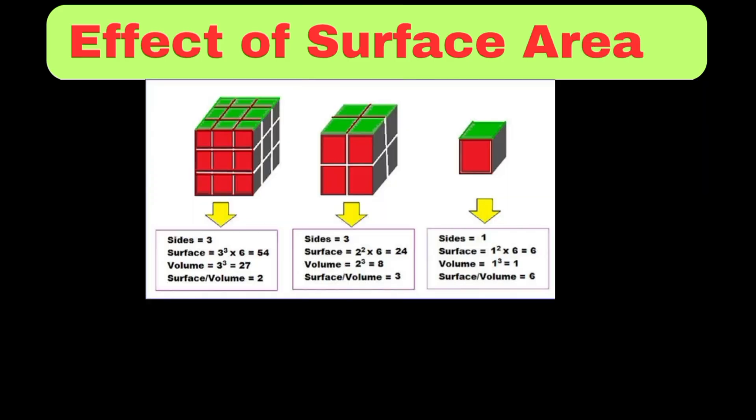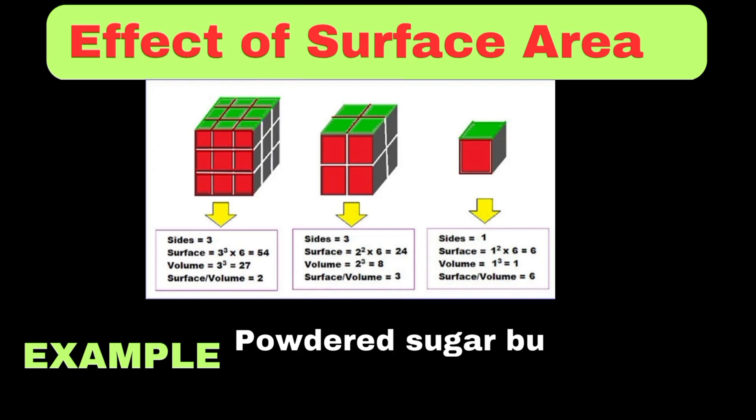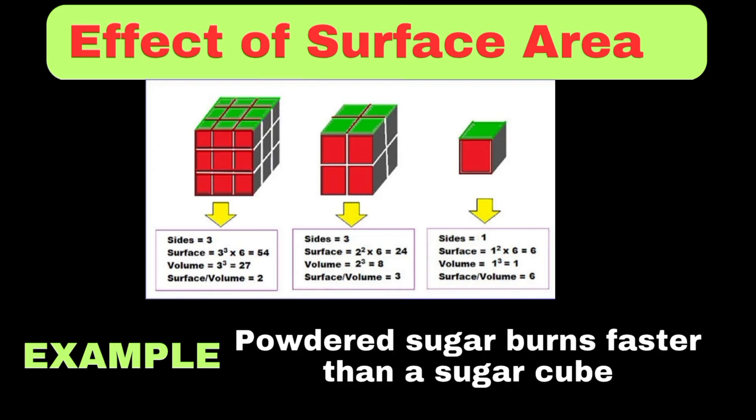A smaller particle size means more surface area is exposed, which allows more collisions and a faster reaction. For example, powdered sugar burns faster than a sugar cube because more surface area is exposed to oxygen.